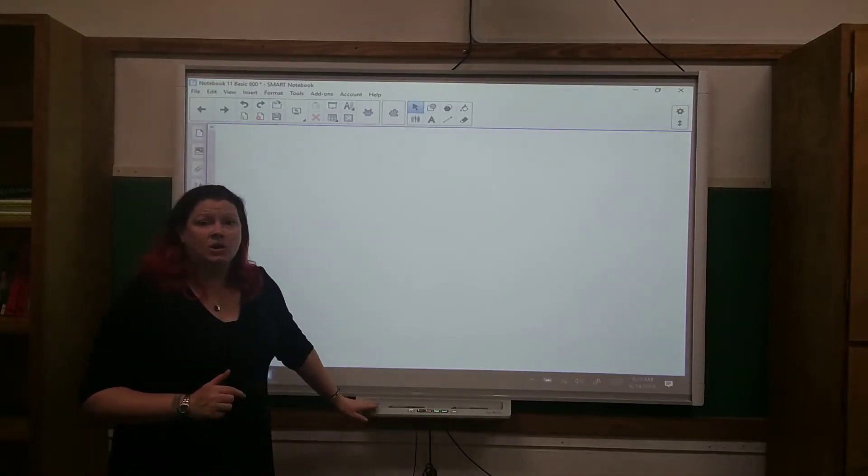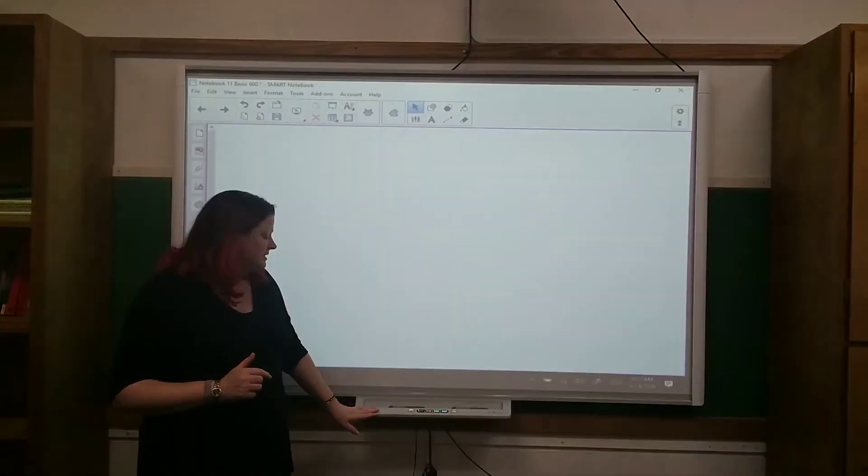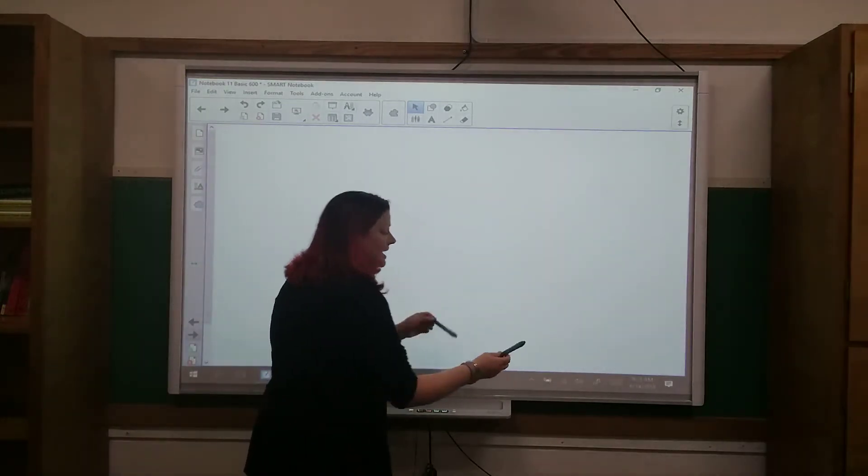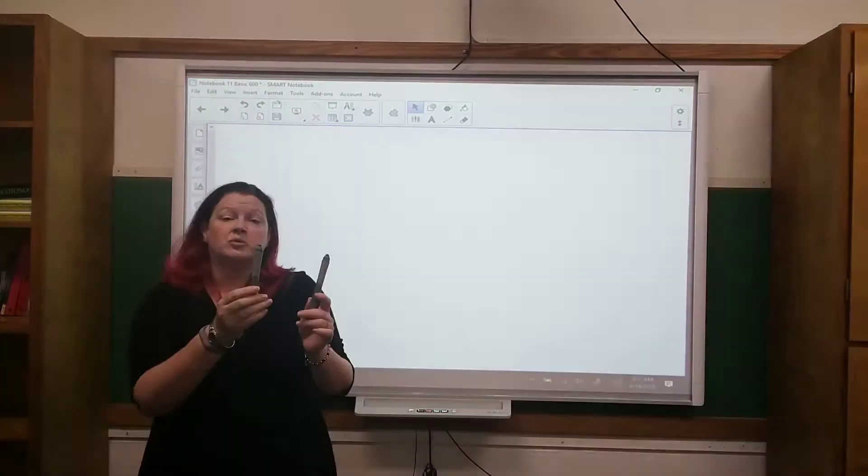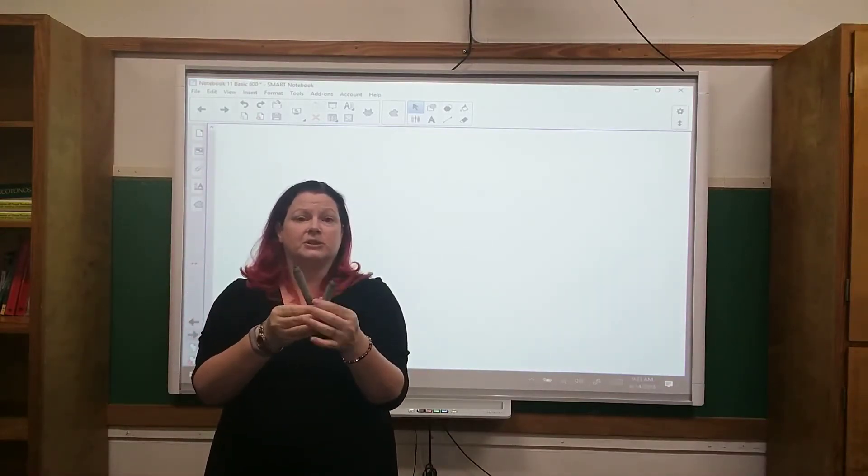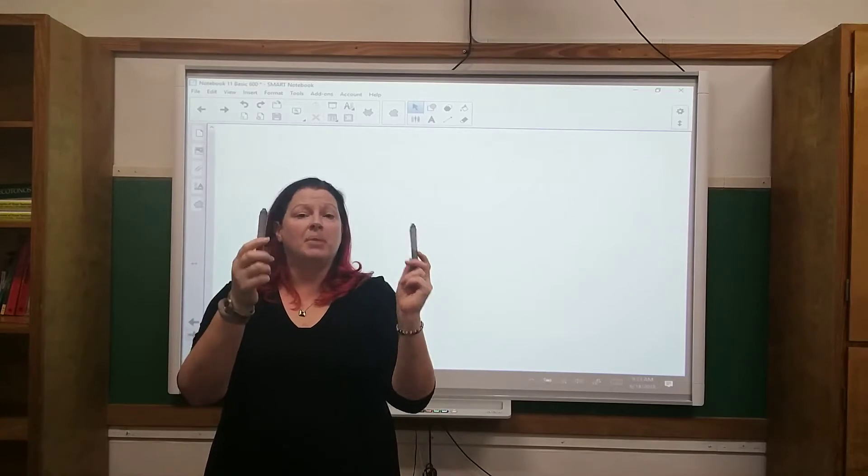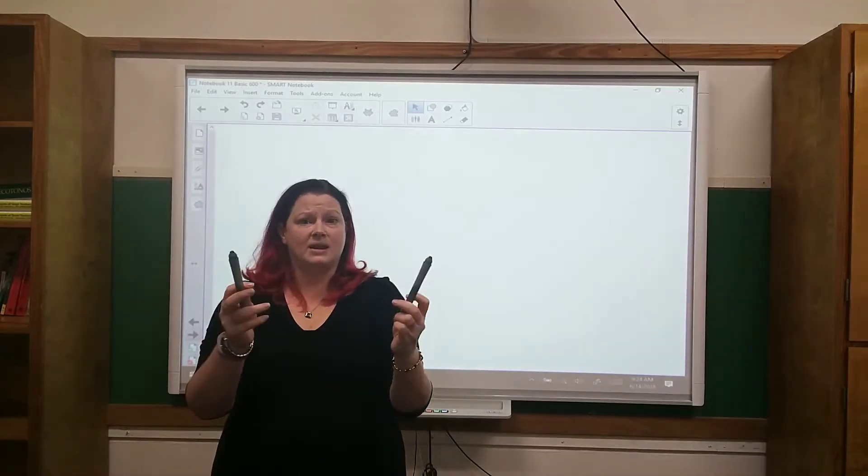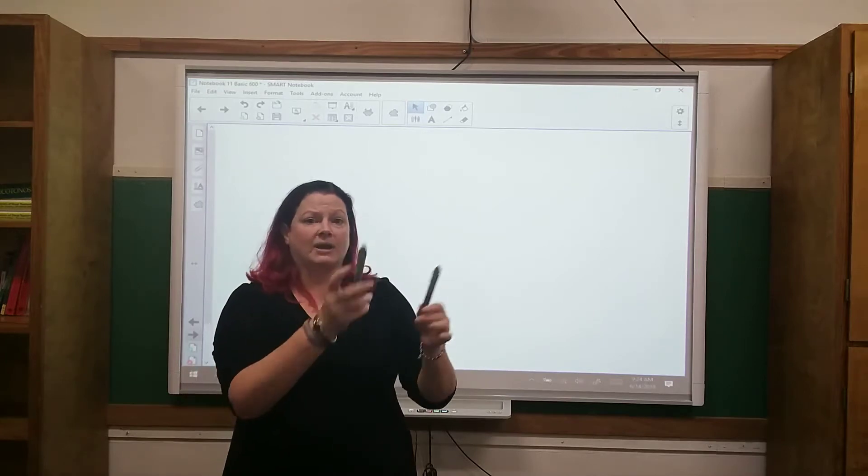Let's talk about the pen tray across the bottom of the 600M series board. On the pen tray here, we have two different pens. Unlike some of the other boards that you see, these two pens are completely generic. There is no difference between one and the other. But, like the other boards, there is no ink contained in these pens of any kind. They simply interact with the board.